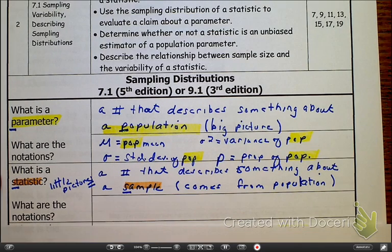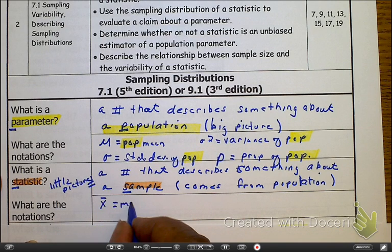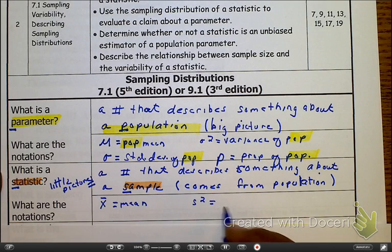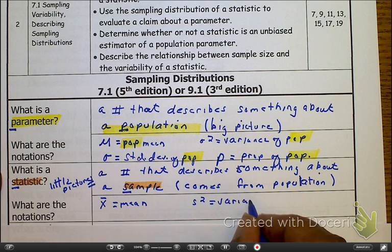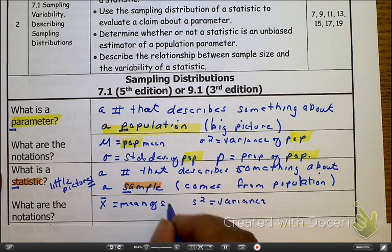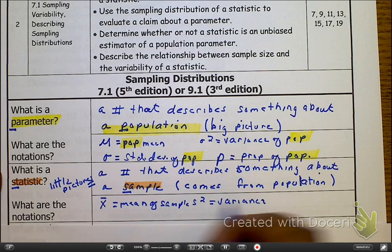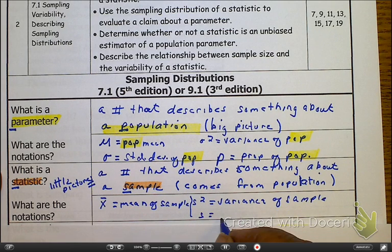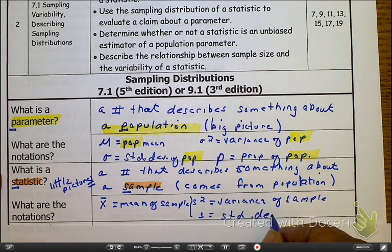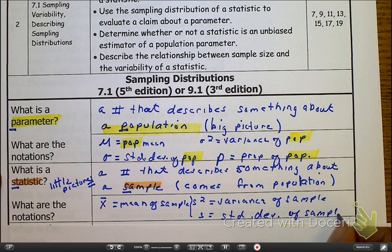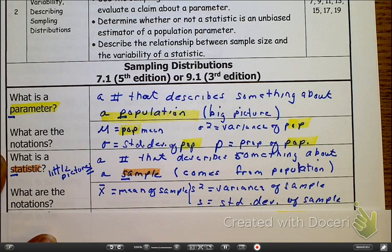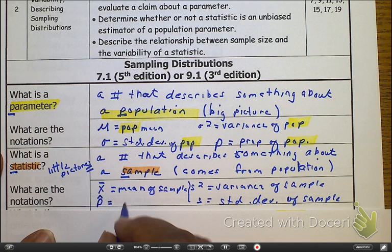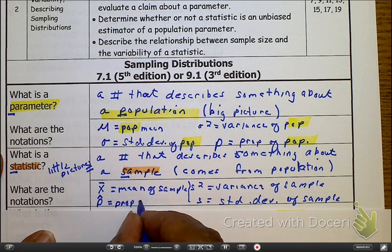And as we look at notation, well, let's think about it. Here, this is what we used when it was the mean x̄. Here, this is what we used when it was the variance s². And this is of the sample. And what else? Standard deviation s, of course, of the sample. And something we have to get used to that you haven't seen before is the idea of P hat, which is the proportion of the sample.